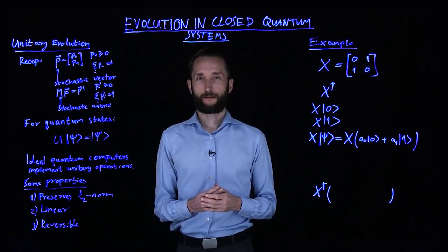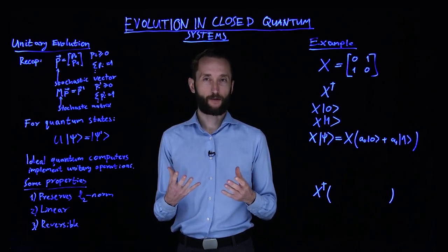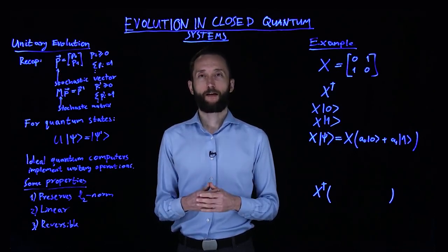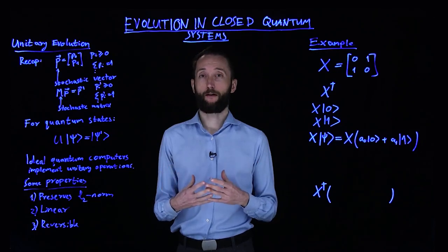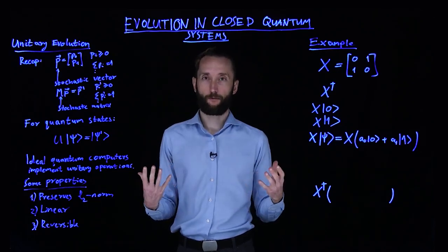We looked at what a quantum state is and we looked at how we can pull out samples from a quantum state. And now it's time to look at how we do a quantum computation. In other words, how we evolve this probability distribution.